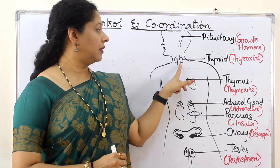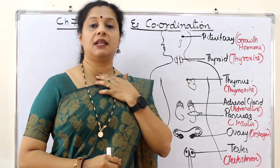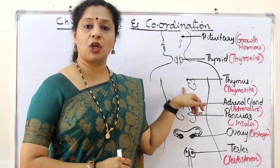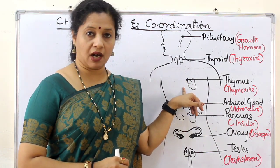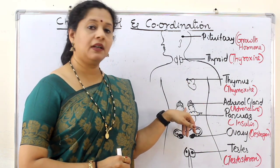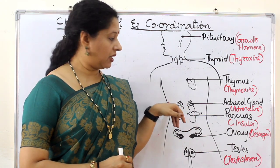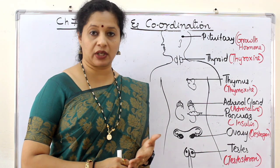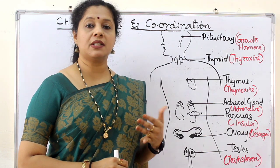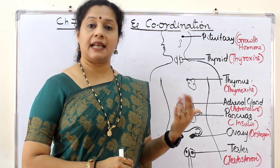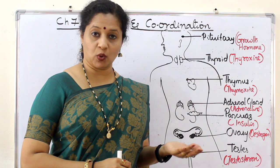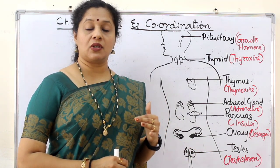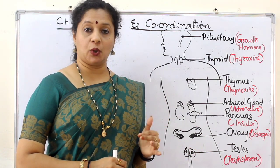Then comes the thyroid, which is present in the throat region. Next is the thymus, which is present on top of our heart. On top of our kidneys we have a pair of adrenal glands. The pancreas is actually a heterocrine gland because it can secrete digestive enzymes, making it an exocrine gland, and it can also secrete hormones, making it an endocrine gland as well.